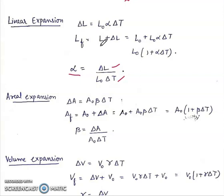Final length will be initial length plus change in length, equal to L0 plus L0 alpha delta T, or L0 times 1 plus alpha delta T.